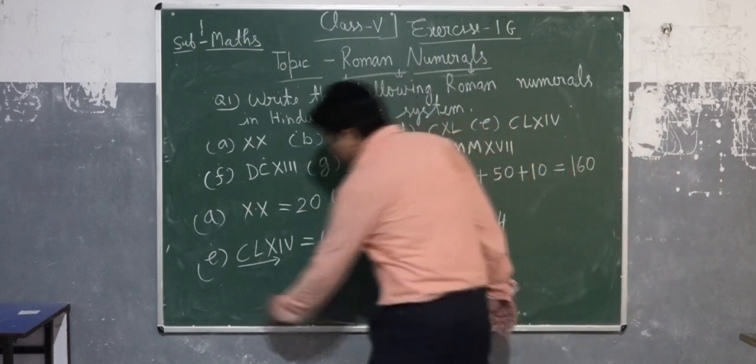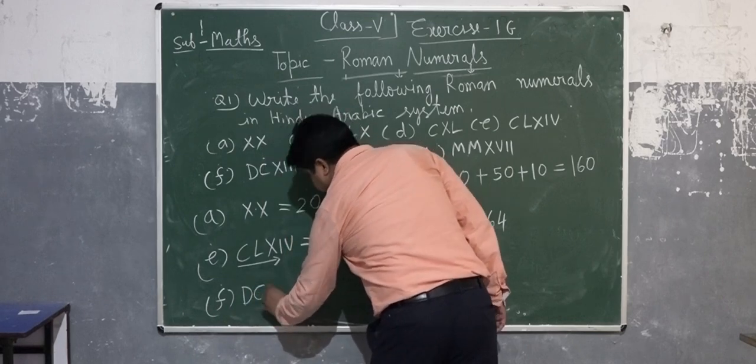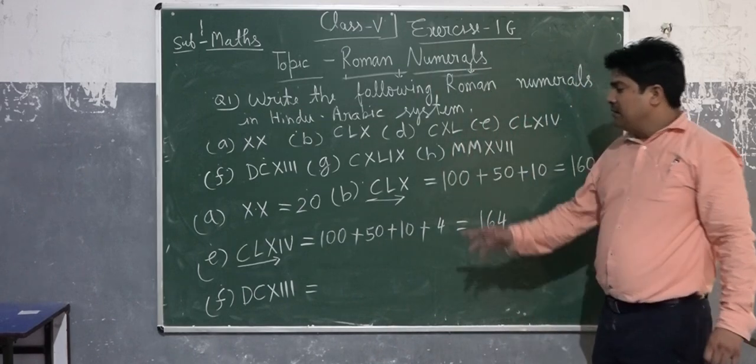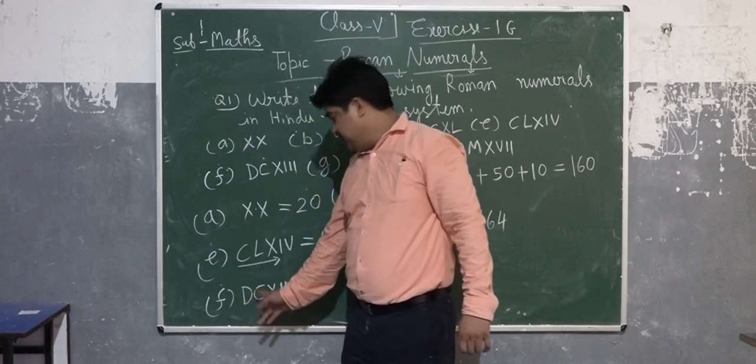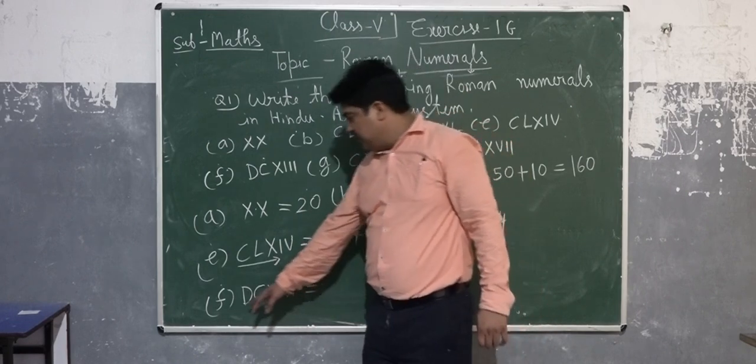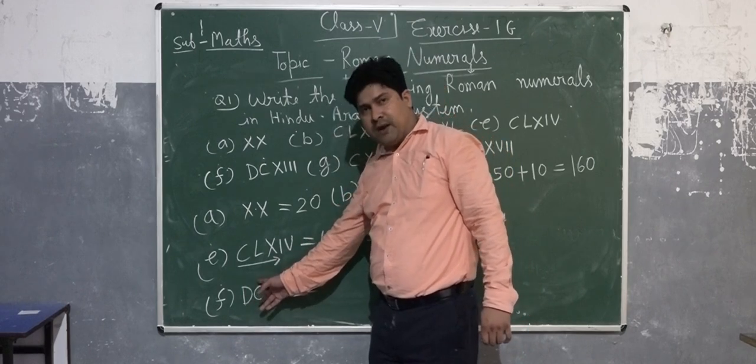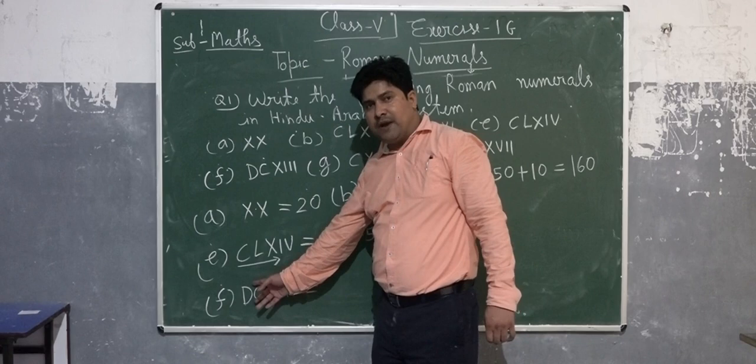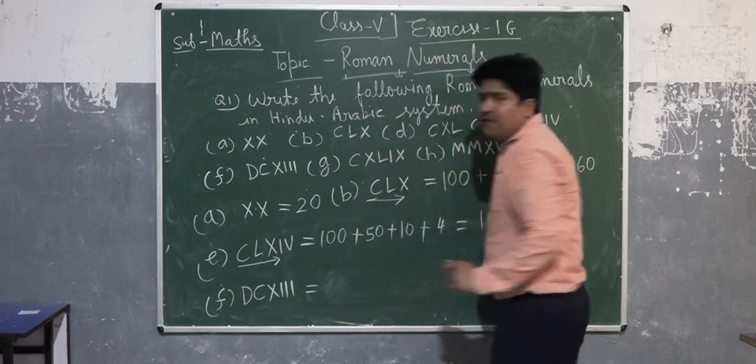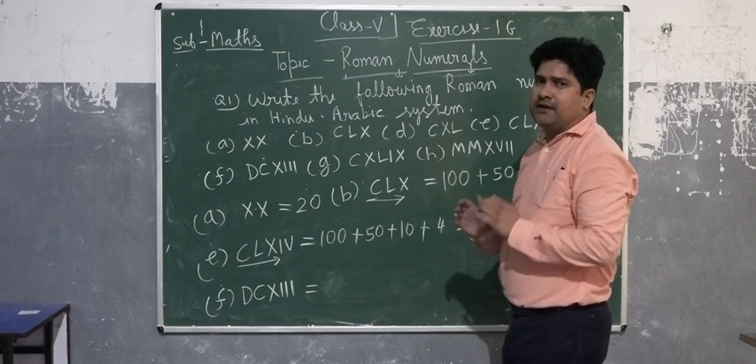Now we will take another, DCXIII. We're looking at D, value of D is 500, C is 100, X is 10, and III. We're looking, these are going in decreasing order. C is bigger, C is smaller than D, and X is smaller than C, and so on. So what will we do? We will apply the first rule. The first rule is, if you are adding smaller numbers in front of bigger numbers, we will add these numbers.